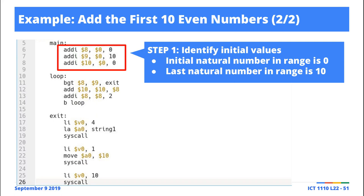In line 8 we define another register that's going to hold the eventual sum. Remember, we want to add the first even numbers — 0, 2, 4, 6, 8, and 10. We start the sum at zero because as we process each number we add it to zero, and any number plus zero is that number. So it will be 0+0=0, then 0+2=2, then 2+4=6, and so on.